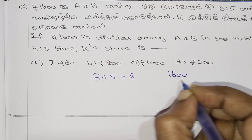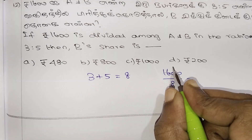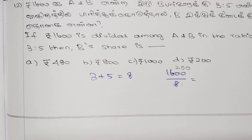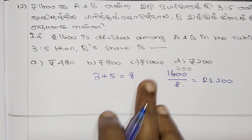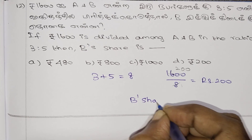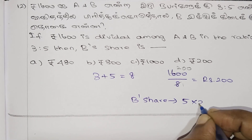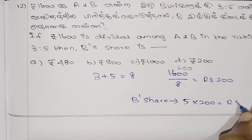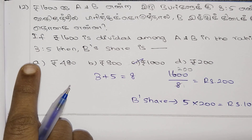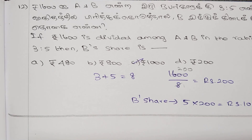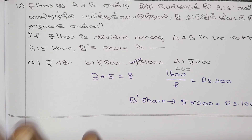Starting from the remaining parts — this is A and this is B. 5 is equal to B. 5 into 200 is equal to 1000 rupees. And 3 into 200 is equal to 600. Okay, you can see that. This class is completed.